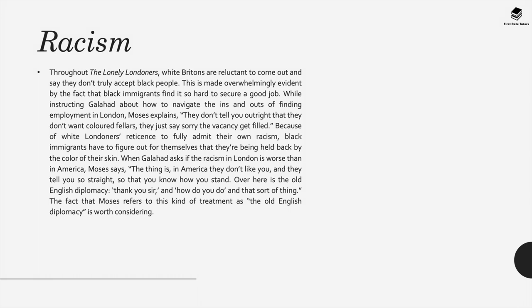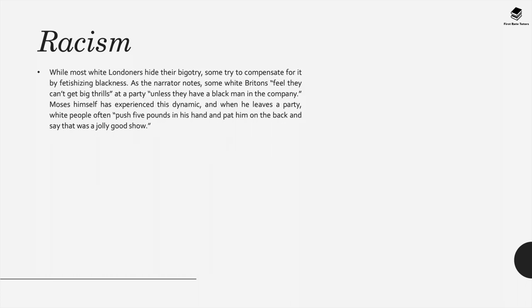When Galahad asks if the racism in London is worse than in America, Moses says: 'The thing is, in America they don't like you and they tell you straight so that you know how you stand. Over here is the old English diplomacy — thank you sir and how do you do and that sort of thing.' The fact that Moses refers to this as 'the old English diplomacy' brings to mind colonial ideas. While most white Londoners hide their bigotry, some try to compensate for it by fetishising blackness — the narrator notes that some white Londoners feel they can't get big thrills at a party unless they have a black man in the company. Moses himself experiences this dynamic when he leaves a party and white people often push five pounds into his hand and pat him on the back, saying it was a jolly good show.